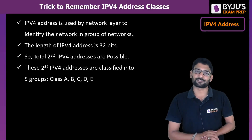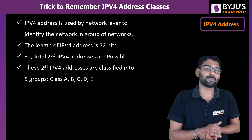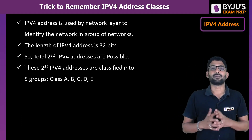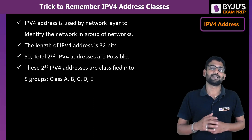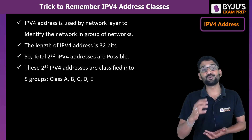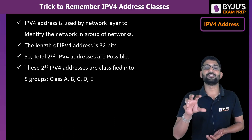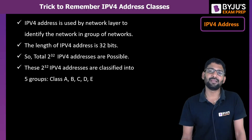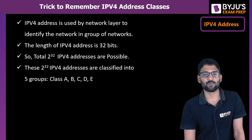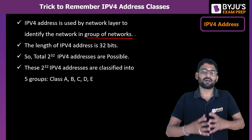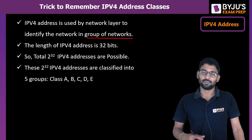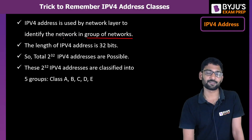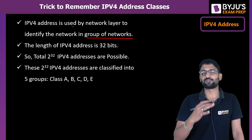First of all, what is an IP address? An IP address is the unique address that is generated and used by the network layer to identify a network. When there are many networks in a very wide area network, to identify a particular network we use this IP address. There are two versions: version 4 and version 6.